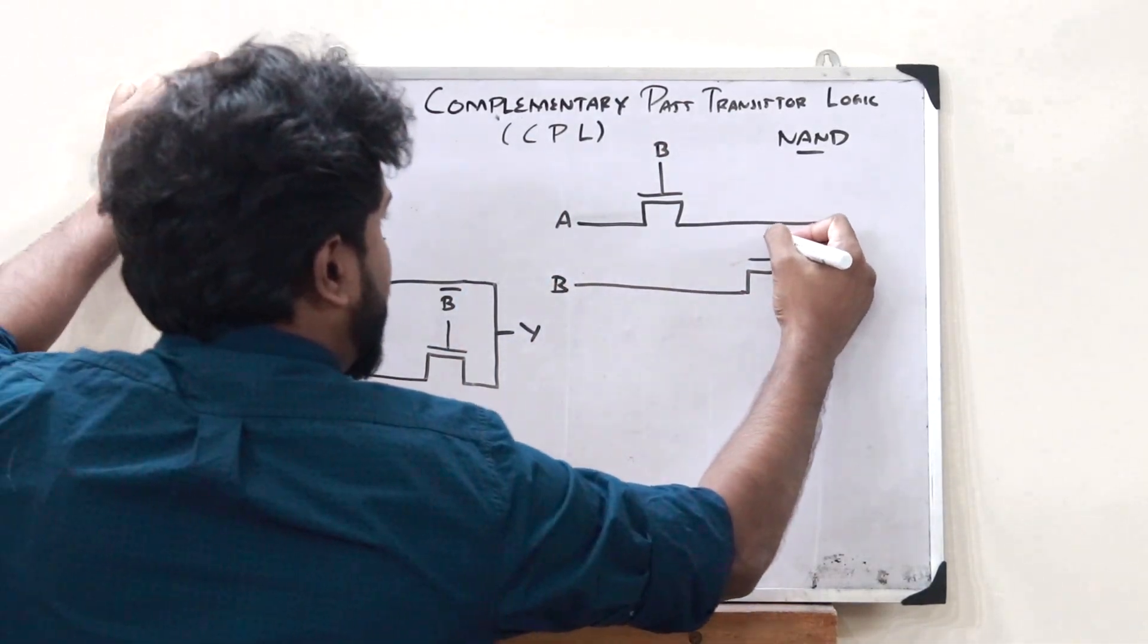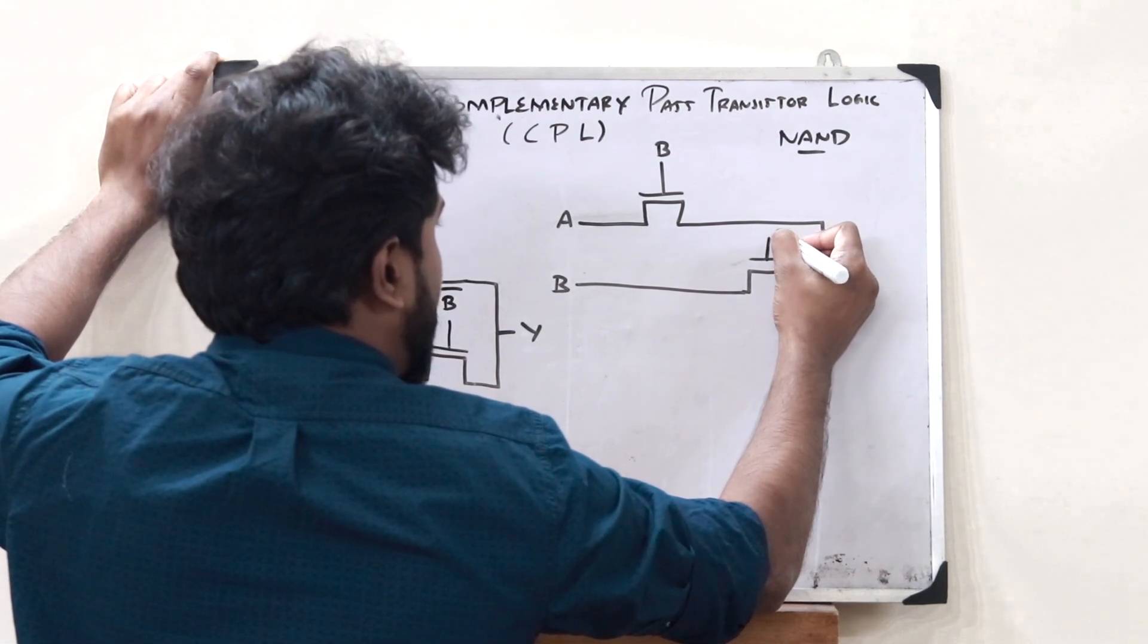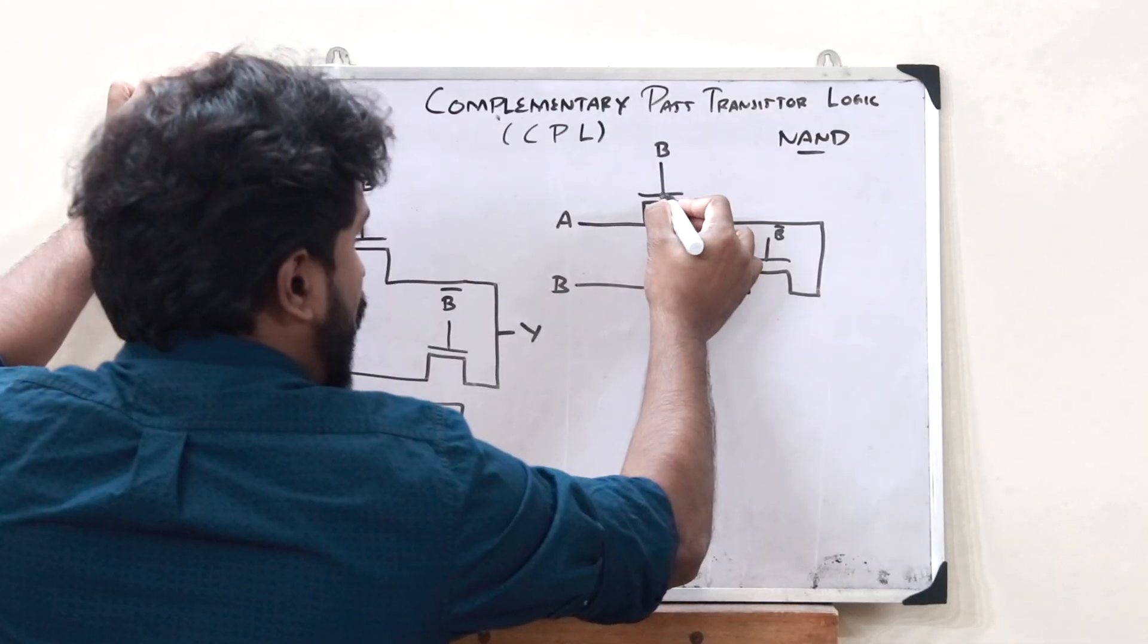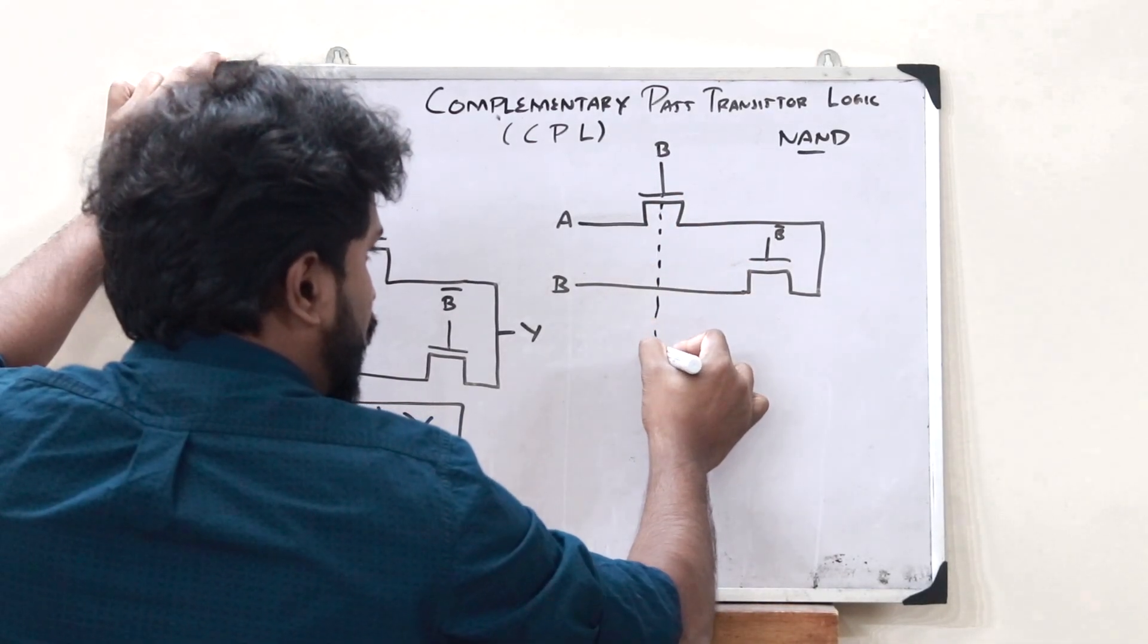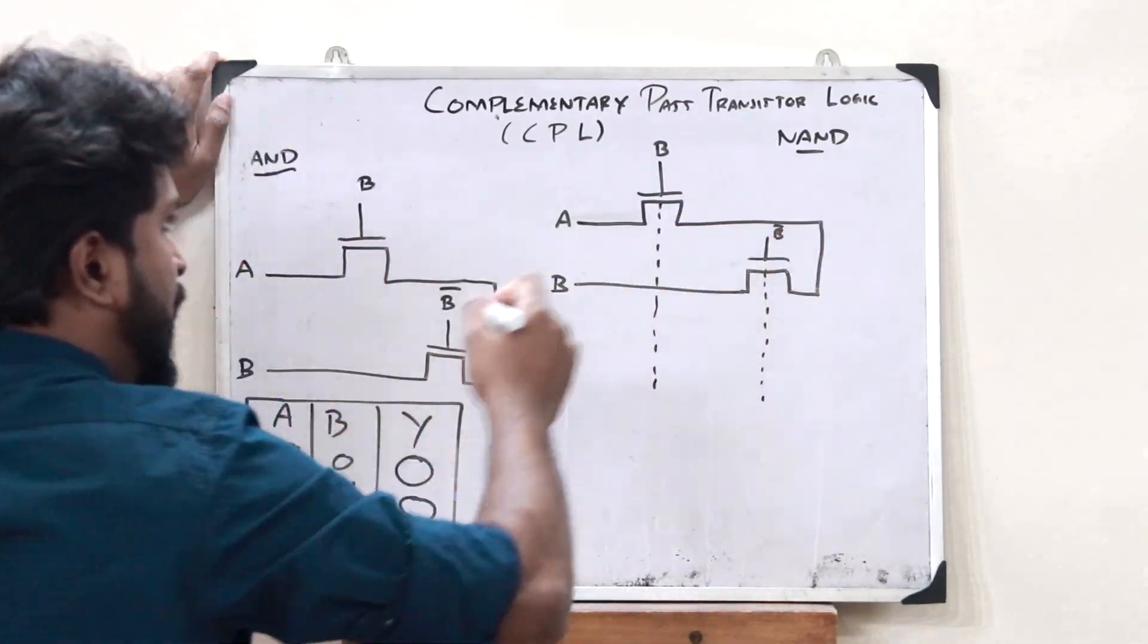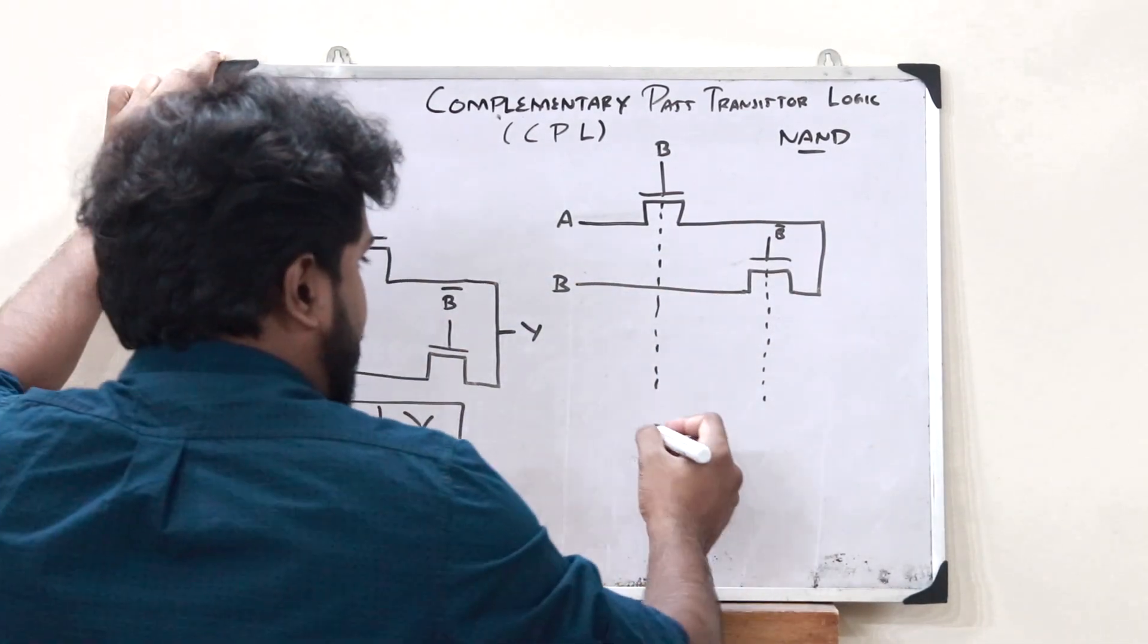And here, if this is B, then here we get B bar. Now, what we do is that we now extend these two below like this. That is the value of B and B bar. We extend it downwards. And again, here we would have another pass transistor like this.